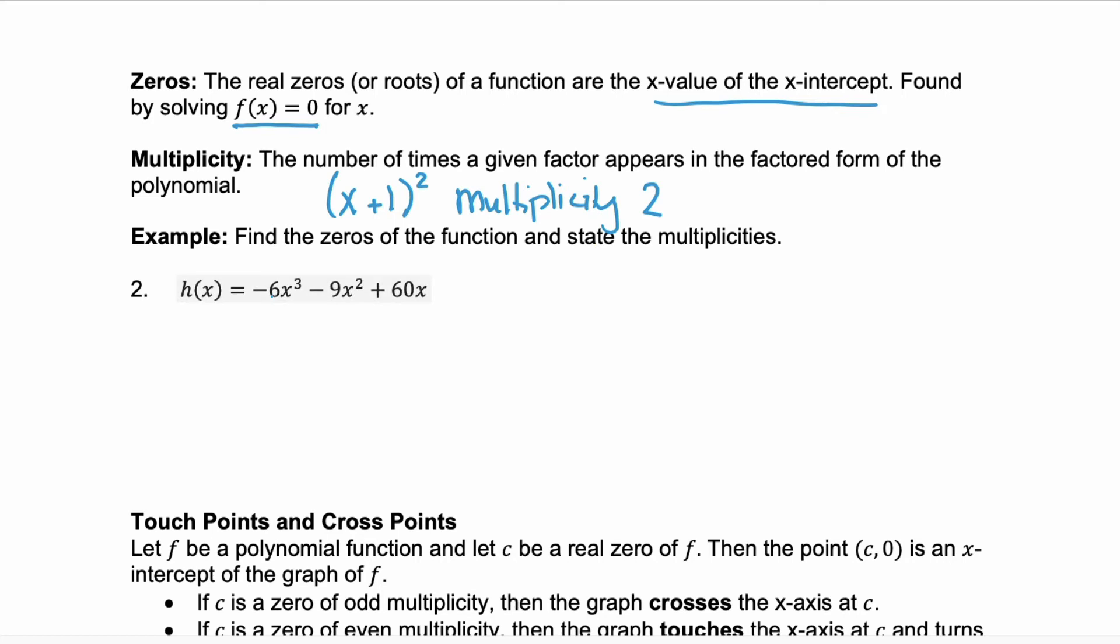Let's look at an example on how you actually find the zeros of a function of this polynomial. Well, we have a three-term polynomial, so we're going to try to factor it. Remember, when you factor, you look for a GCF first. Here, we have a GCF of -3x. And when you factor that out, you're left with a polynomial of 2x² + 3x - 20.